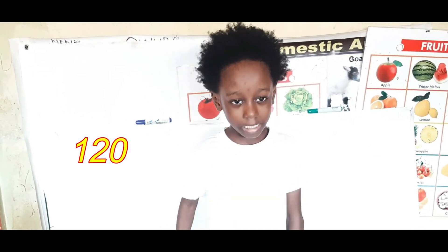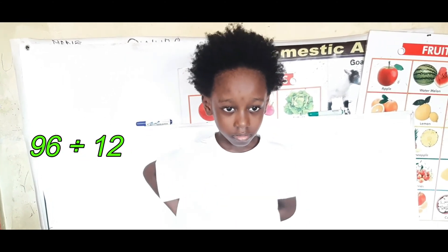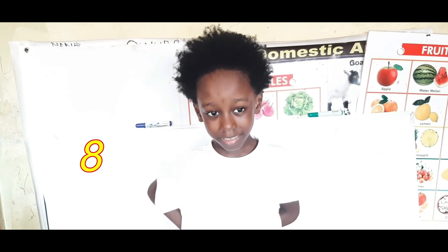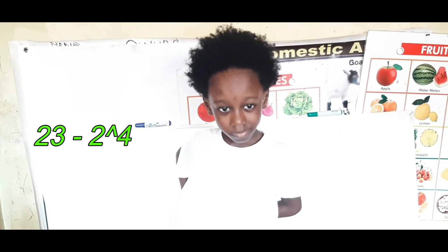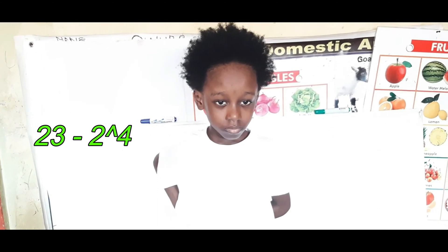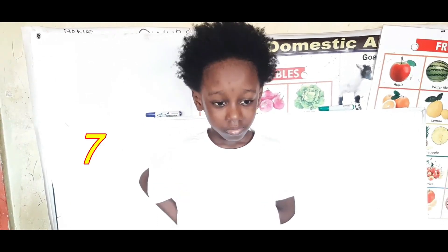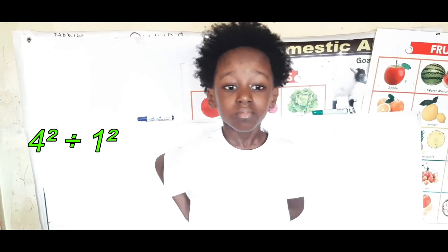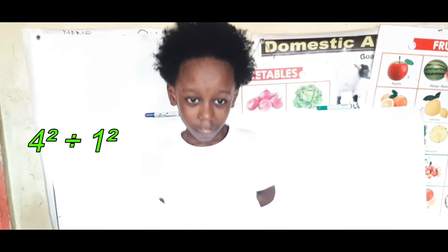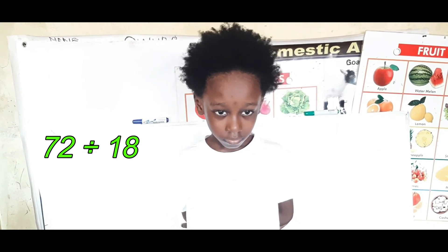What had the 20? 96 divided by 12. 8. 23 minus 2 raised to the power 4. 7. 4 squared divided by 1 squared. 16. Very good. 72 divided by 18.